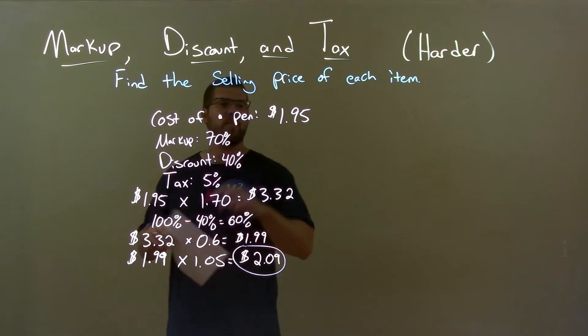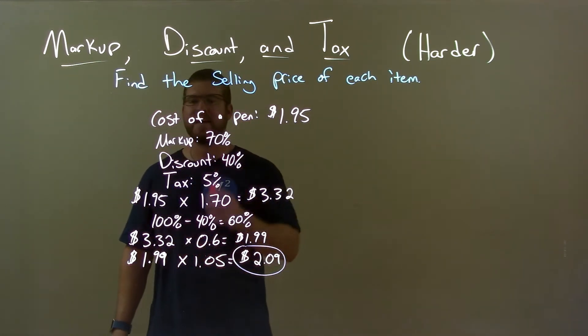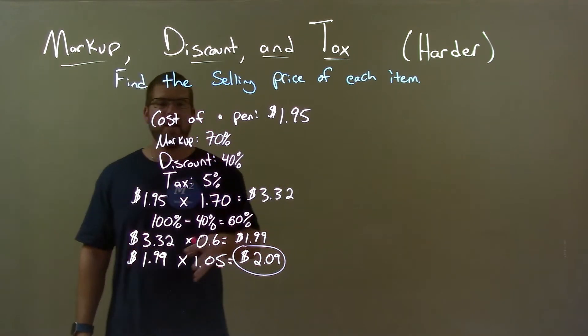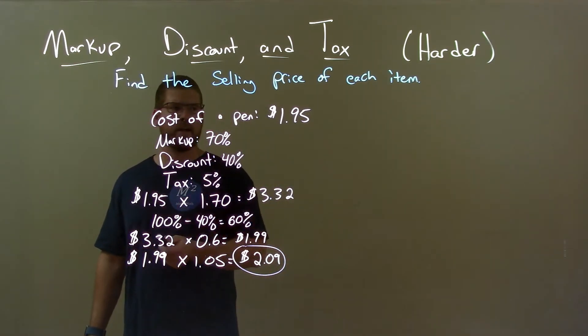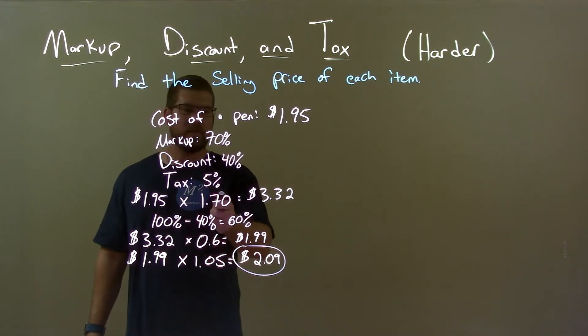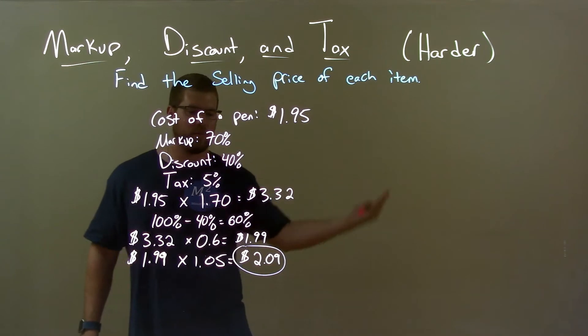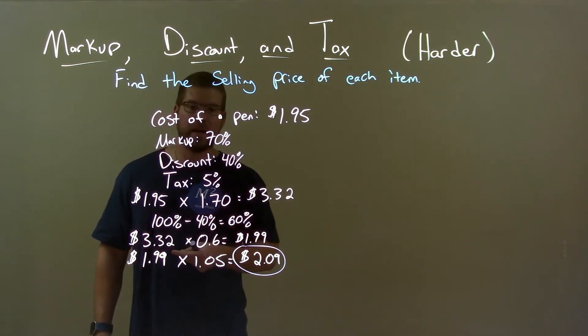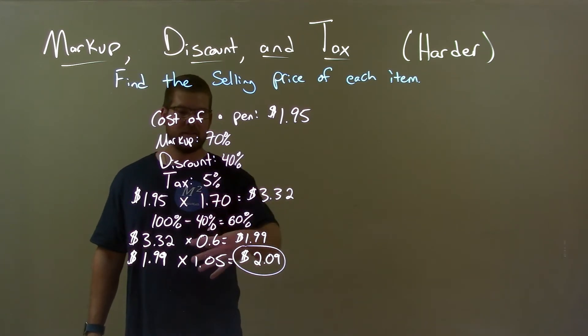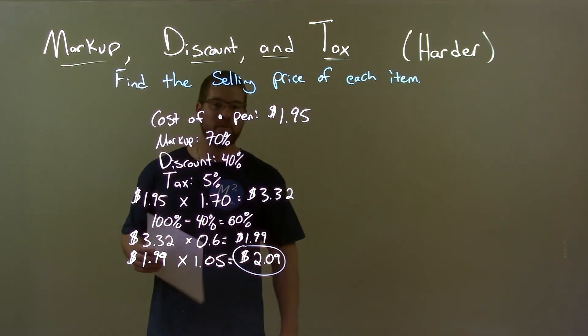We're given the cost of a pen as $1.95. It's markup 70%, discount 40%, and taxes 5%. And we define the final sale price of that. So, we take the $1.95, multiply it by 70% markup, 1.7, and got $3.32. Then, 40% discount means we pay 60% of the price, multiply that by 0.6, and got $1.99. Then, $1.99 times our 5% tax increase, so multiply by 1.05, and got a final answer of $2.09.